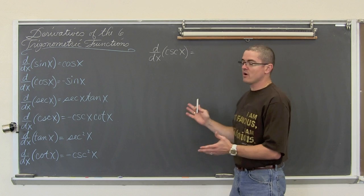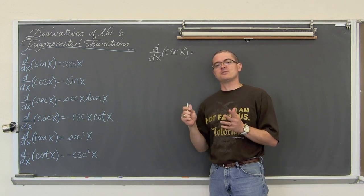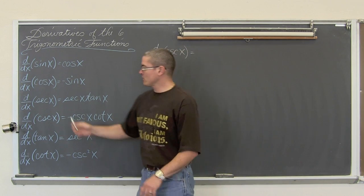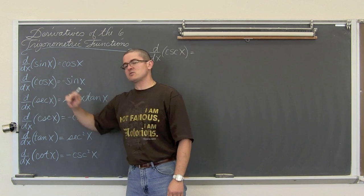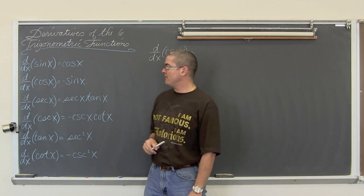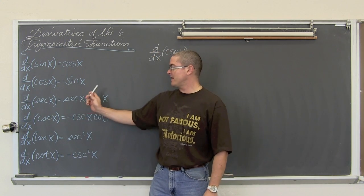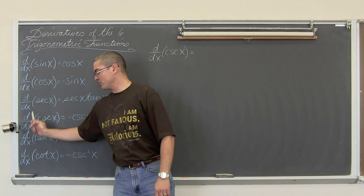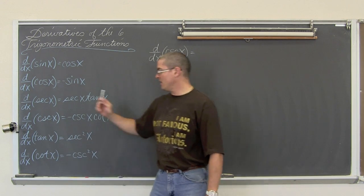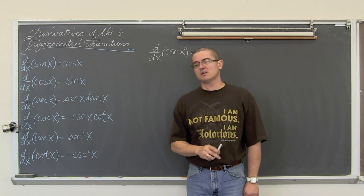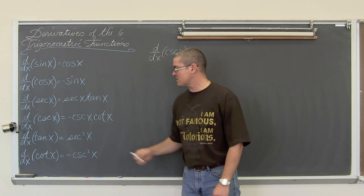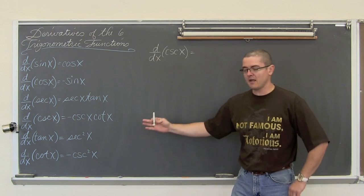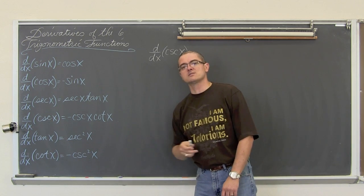Now we have got four other trig functions of course and we have to know the derivatives of those as well. So the derivative with respect to x of the secant of x is equal to the secant of x times the tangent of x. The derivative with respect to x of cosecant of x is equal to negative cosecant of x times cotangent of x, and so on and so on, because I am sure you can read this.